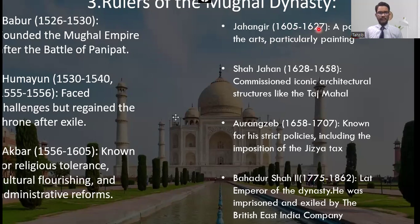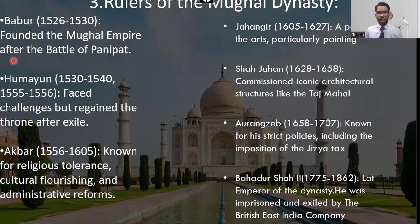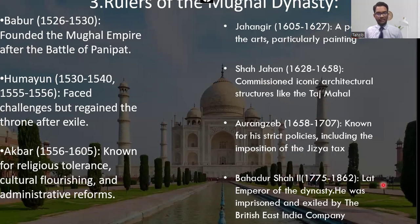The rulers of this dynasty were Babur, Humayun, Emperor Akbar, Jahangir, Shah Jahan, Aurangzeb, and finally Bahadur Shah the Second, who was the last emperor. He was imprisoned and exiled by the British East India Company.